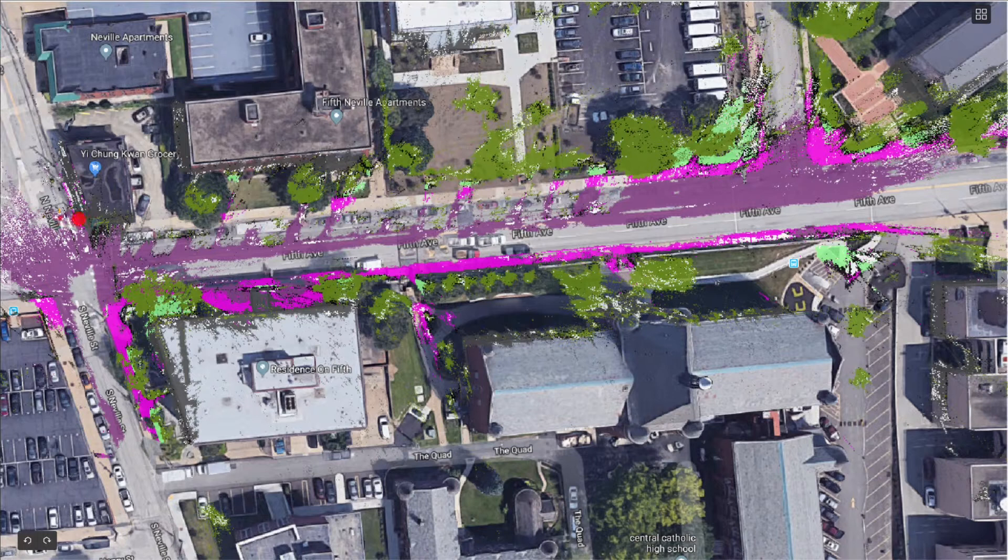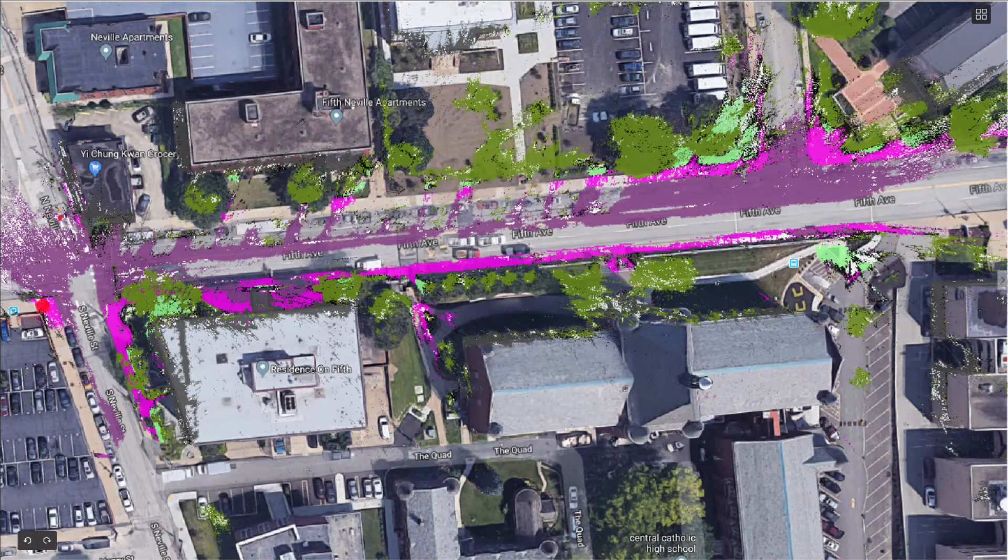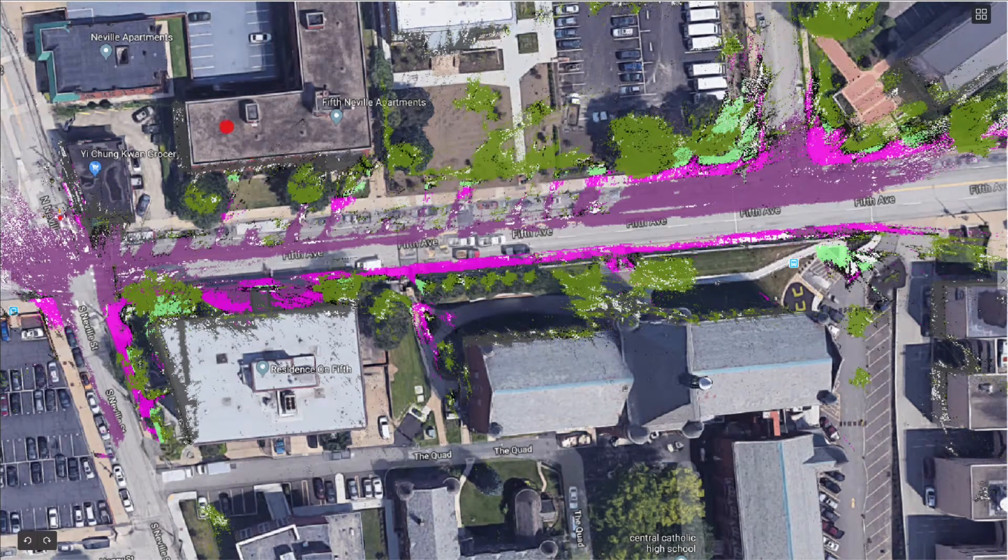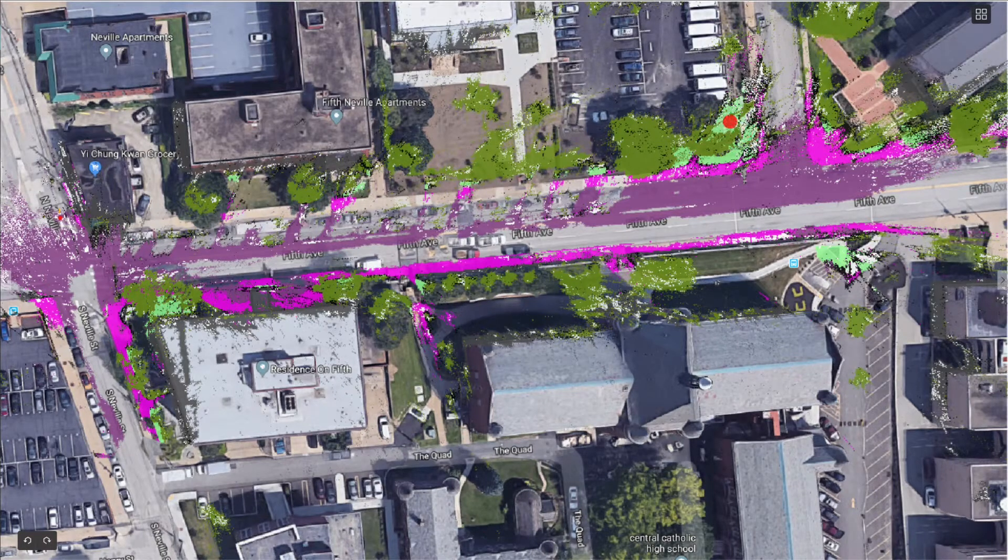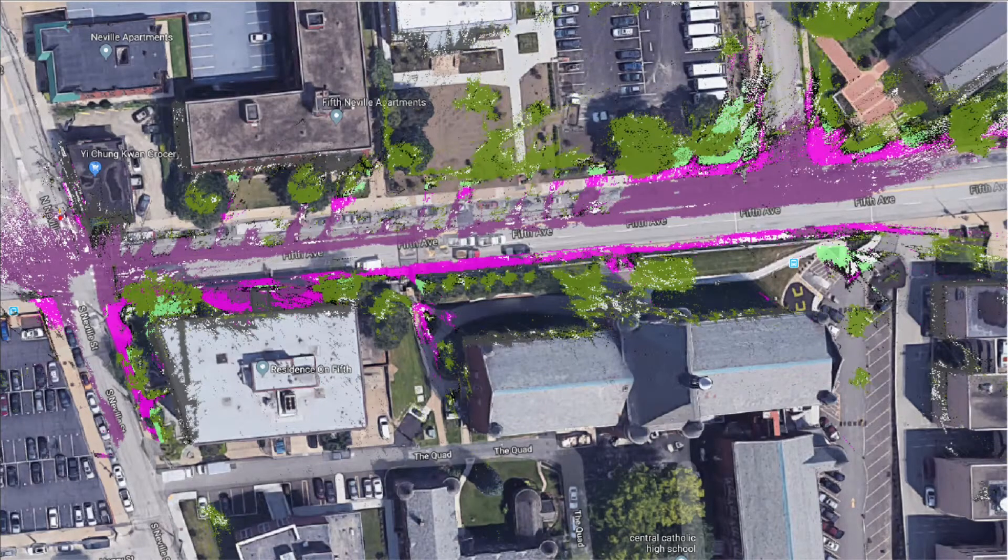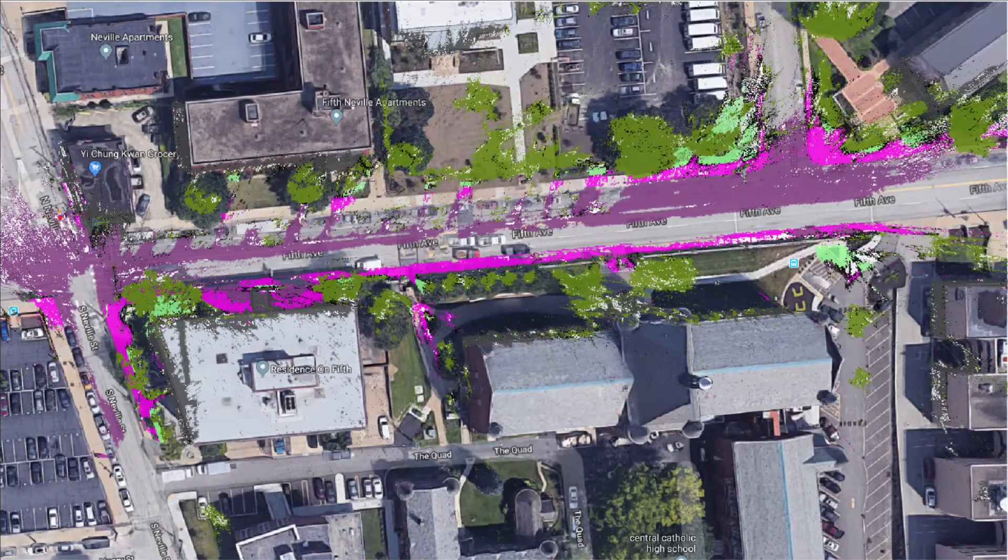So here we see that we have points labeled as road, sidewalk, buildings, trees, vegetation, and some other smaller classes. So let's now assume that this is our map and that we would like to position ourselves in this map.